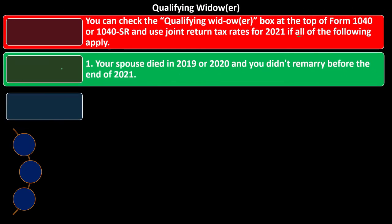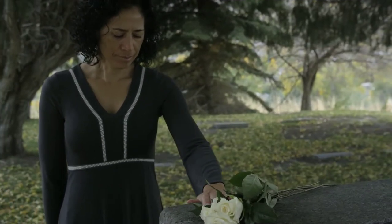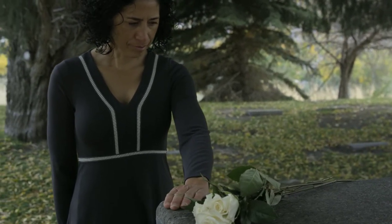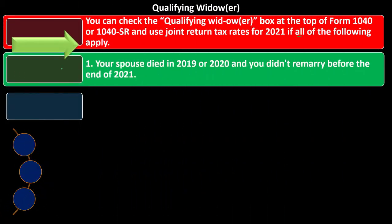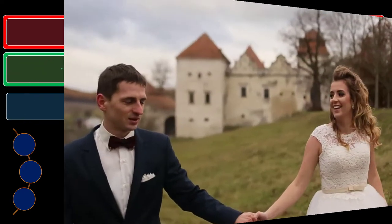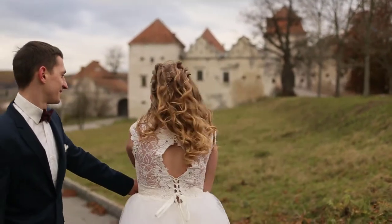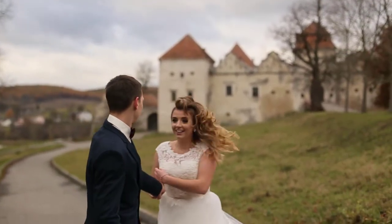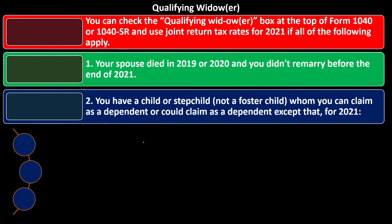First, your spouse died in 2019 or 2020. We're talking tax year 2021, so these are the prior two years. If a spouse died in 2021, they would be filing married filing jointly in 2021, and then 2022 and 2023 would be the years you'd question whether you qualify as widow/widower or single. And you didn't remarry before the end of 2021 — obviously if you remarried, you'd be qualifying for married filing jointly or married filing separately, not qualified widow/widower.